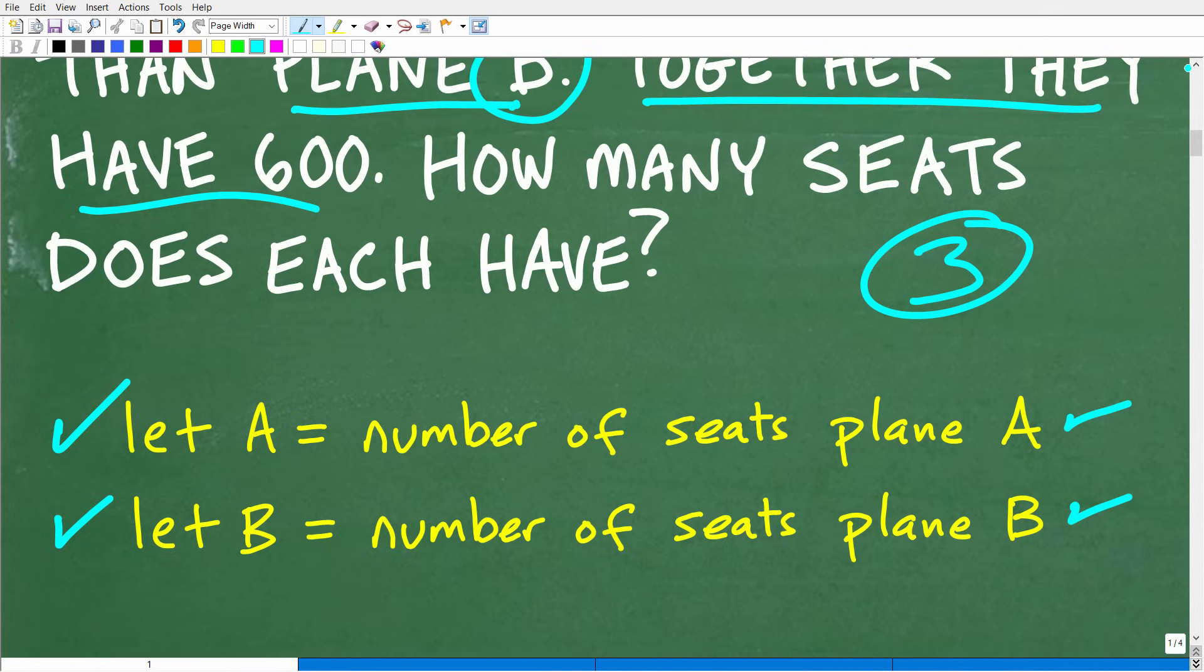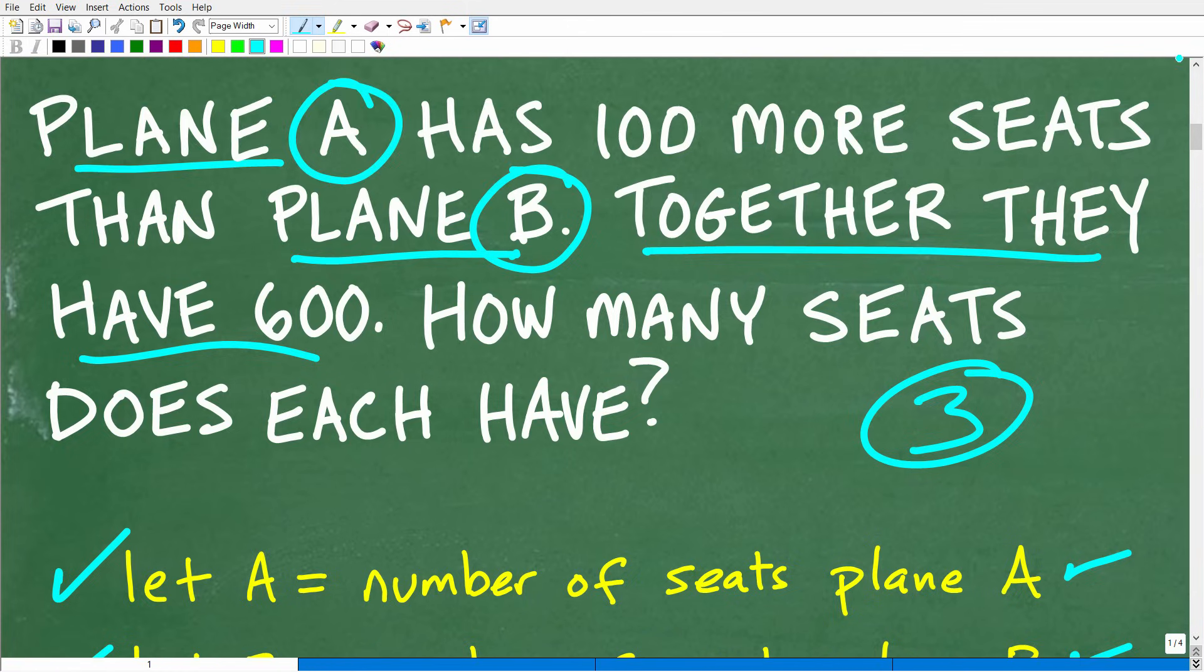Now, what we're going to have to do here is we have two variables, so we're going to have to build two equations. How do we build those equations? We're going to have to come over here and use the information in the problem. So this first part of the problem, plane A has 100 more seats than plane B, is going to allow us to build one equation. And then together they have 600 seats is going to allow us to build two equations.